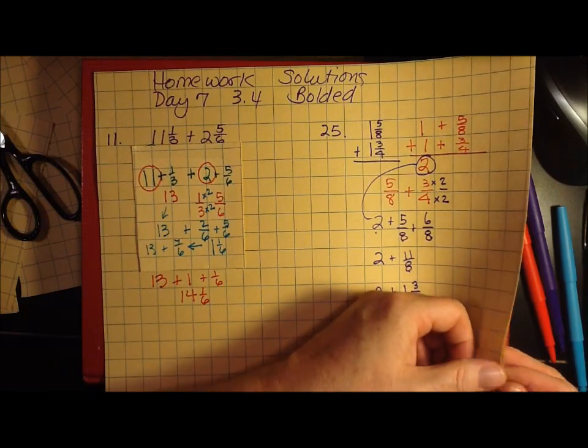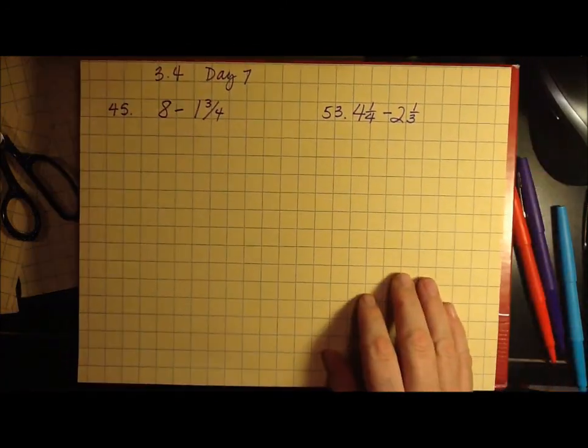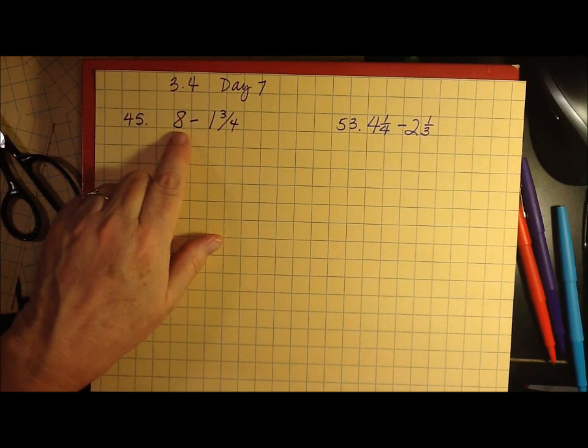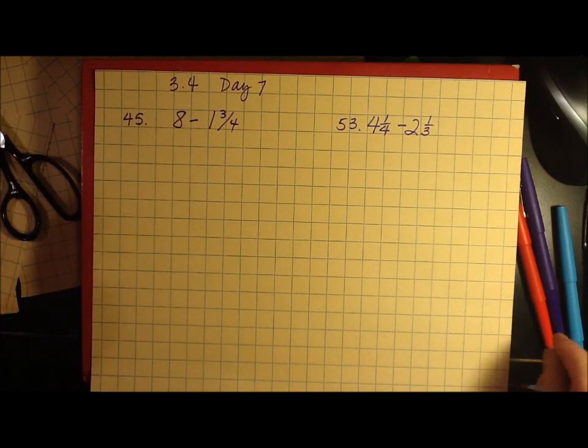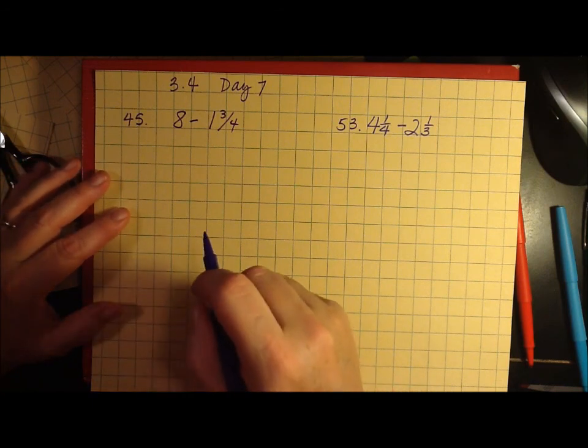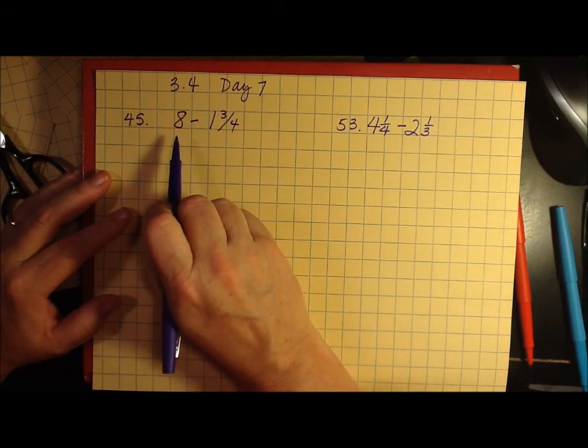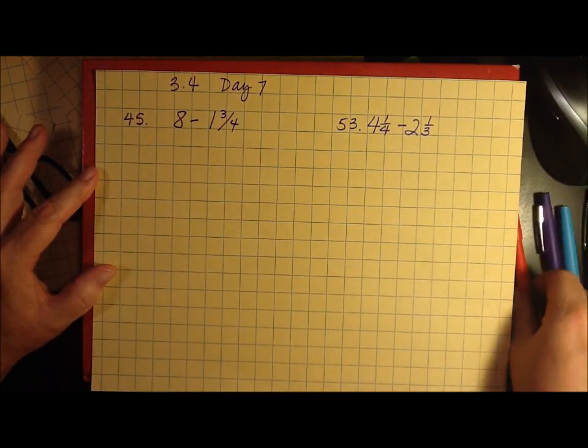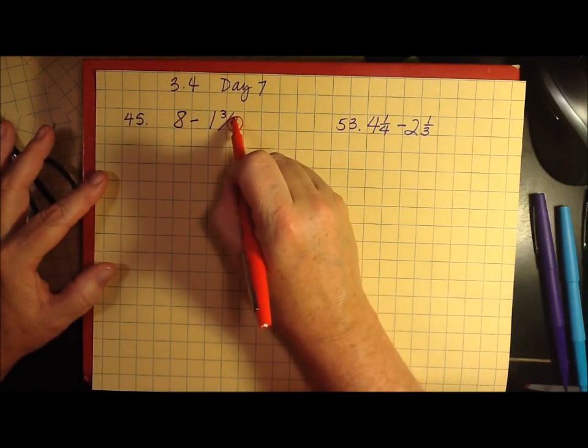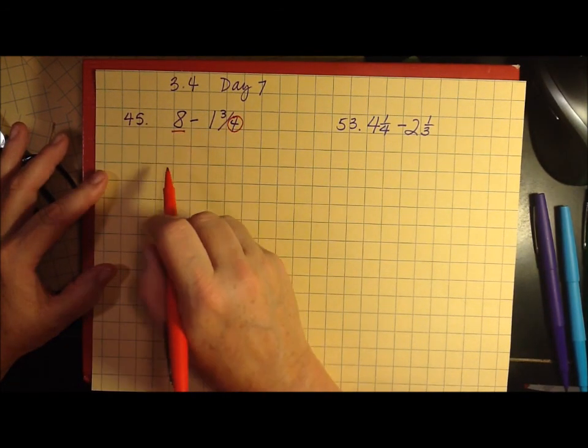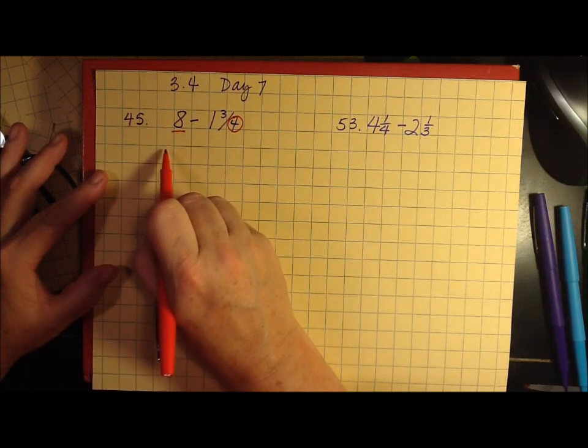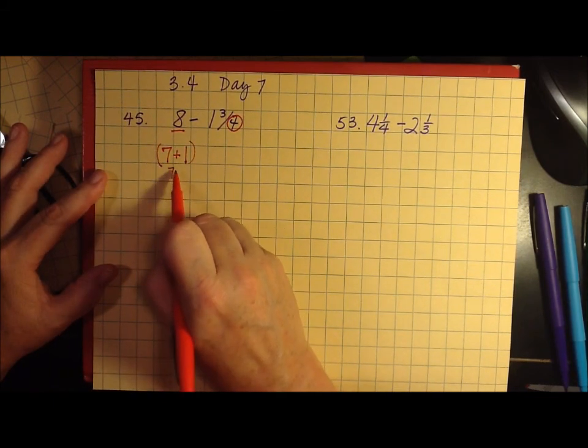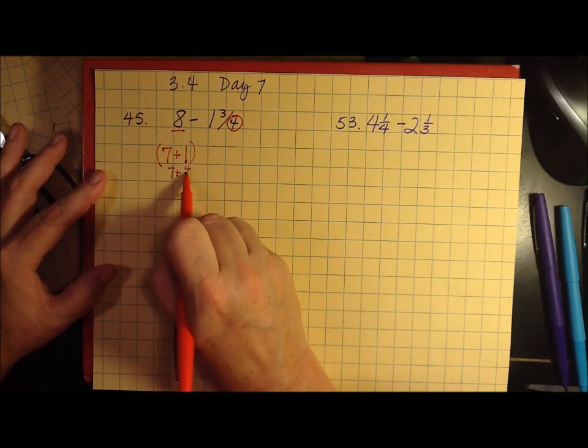The next set of questions on another piece of paper. Here we have number 45. This is slightly different than what we were working with before because we have a whole number with no fractions, and most importantly, it's a subtraction problem. So I need to do a couple of things here before I can really get to work. First I have to look at this fraction and realize that the denominator here is fourths. So that means I have to break this up into 8 or 7 plus 1. And 7 plus 1 in fractions would be four-fourths.